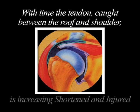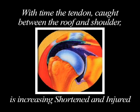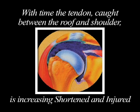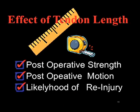If the rotator cuff is left unrepaired, with time the remaining tendon will be repeatedly abraded, injured, and shortened even further. The length of the remaining tendon, as we will see, has a profound effect on strength, motion, and re-injury rates.